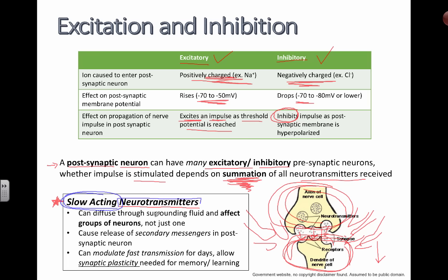What's special about slow-acting neurotransmitters is that they don't just affect one neuron. They can actually diffuse around the surrounding fluid and affect groups of neurons — not just one. This effect can last for a while, and they can cause secondary messengers to be secreted. Notably, they can modulate fast transmission for days.